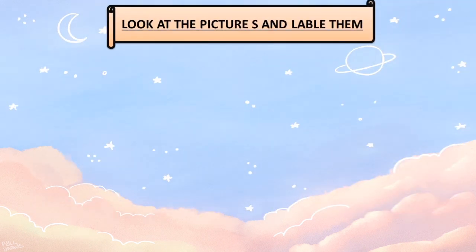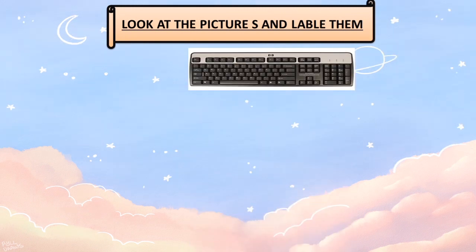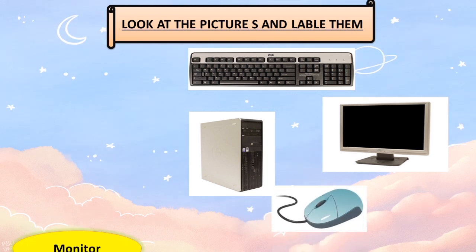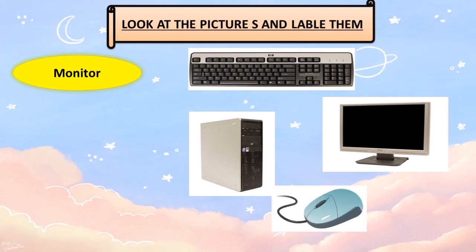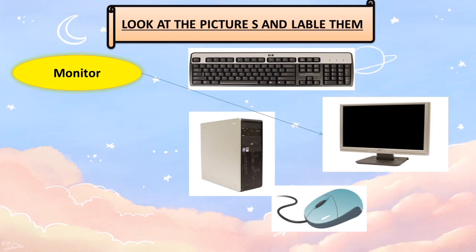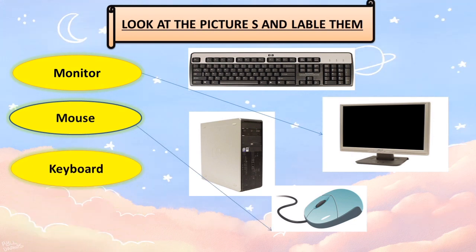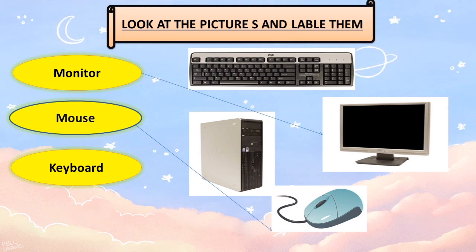Look at the picture and label them. Here we have some pictures of the basic parts of a computer. The first word is monitor — tell me where is the monitor? You are right, here is the monitor. The next is mouse — tell me where is the mouse? Well done, here is the mouse.